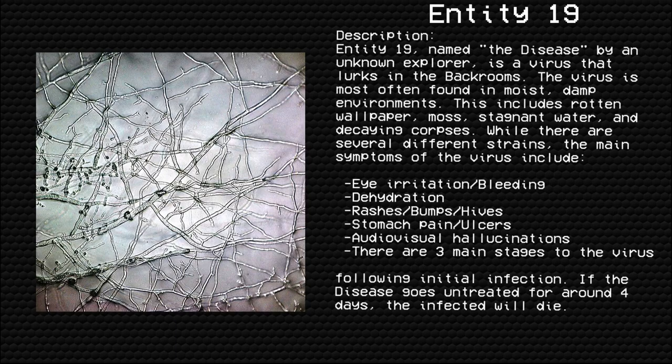Almond water can help. Description. Entity 19, named 'the disease' by an unknown explorer, is a virus that lurks in the backrooms. The virus is most often found in moist, damp environments. This includes rotten wallpaper, moss, stagnant water, and decaying corpses. While there are several different strains, the main symptoms of the virus include eye irritation, bleeding, dehydration, rashes/bumps/hives, stomach pain, ulcers, and audiovisual hallucinations.